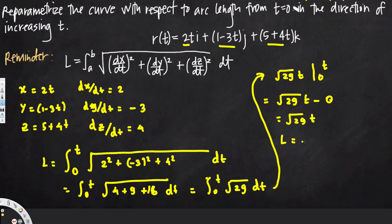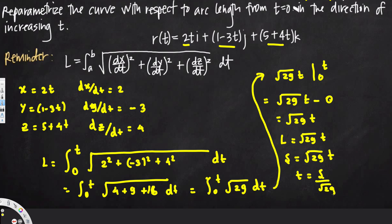Now that we've found the arc length L = √29 · t, to reparametrize we use s as the arc length parameter. So s = √29 · t, which means t = s / √29. Now we replace all the t values with s / √29.